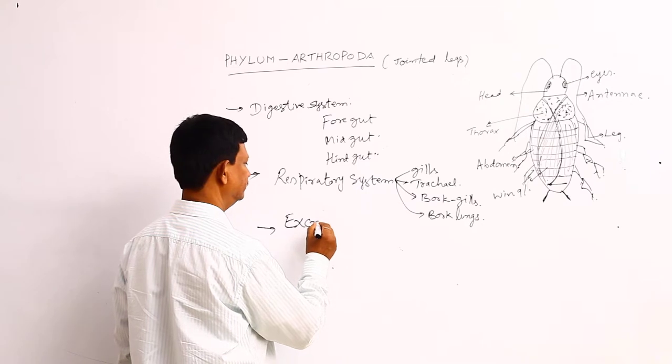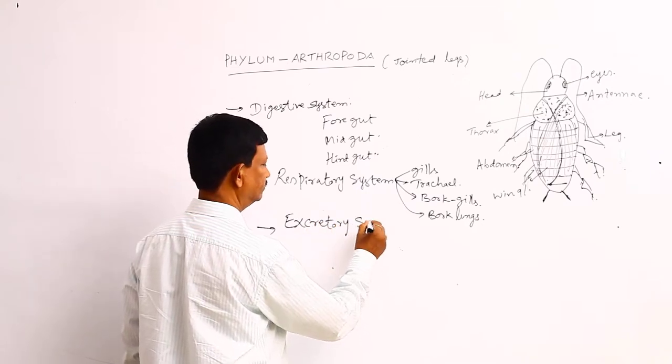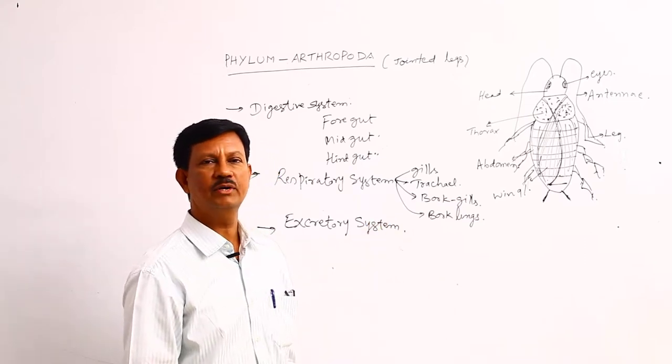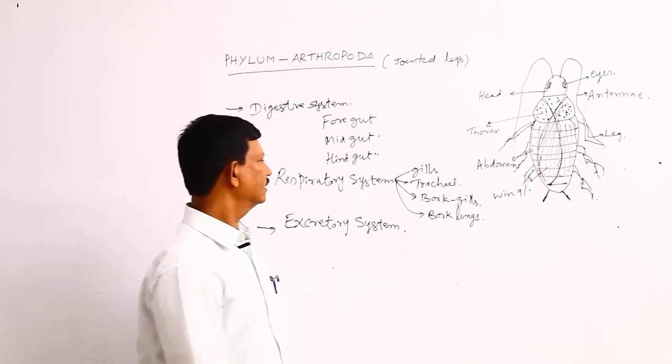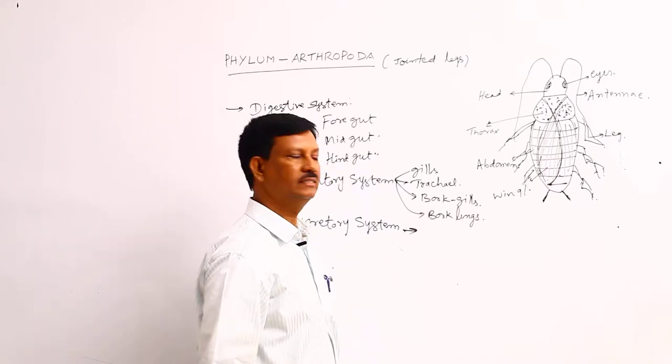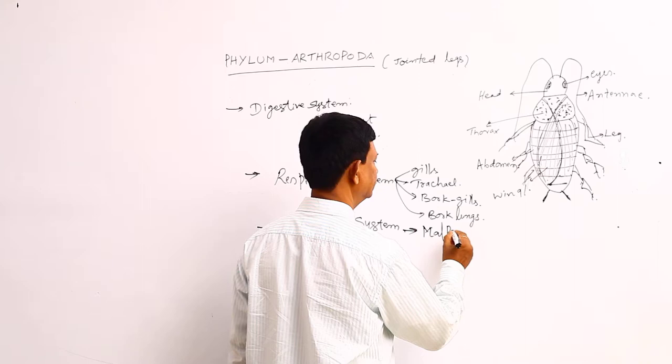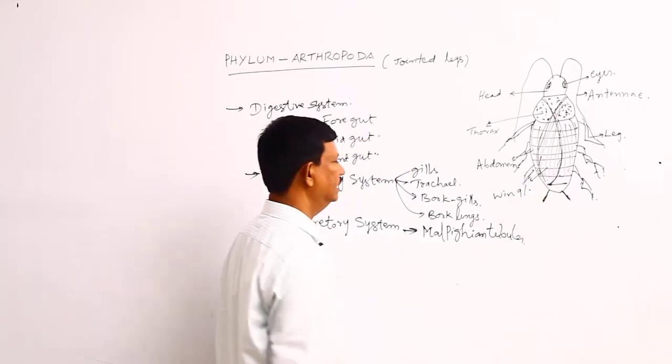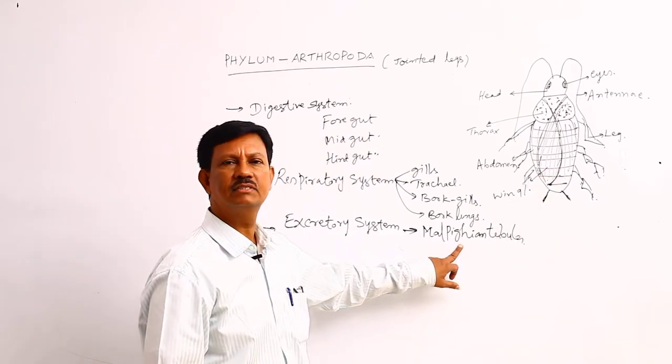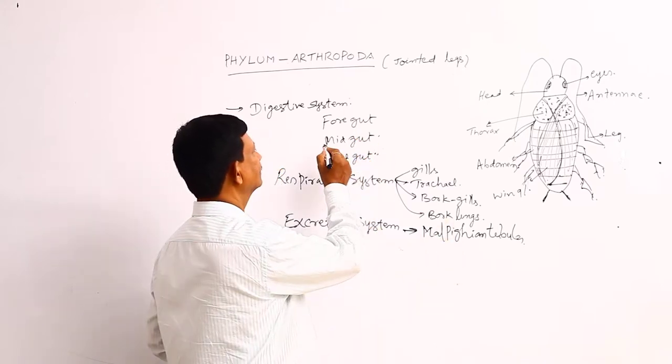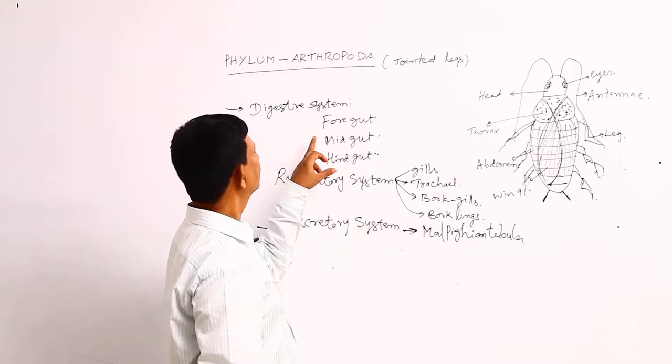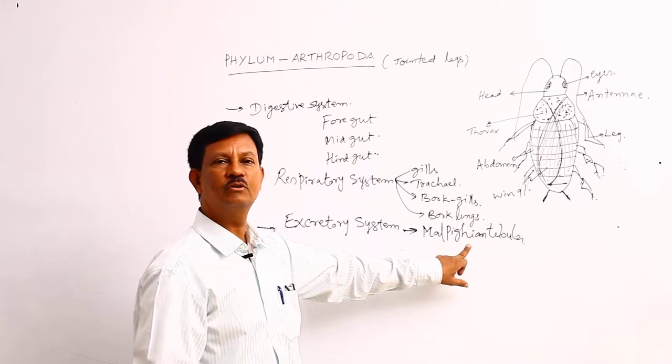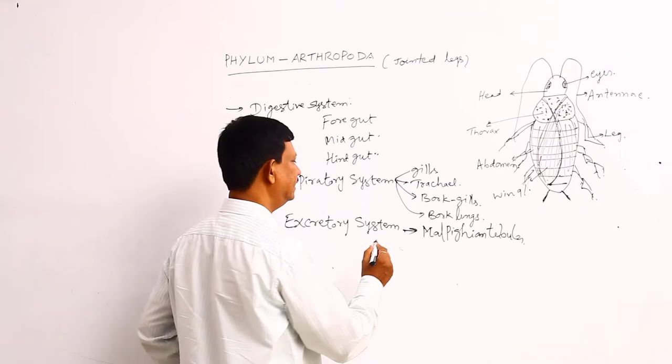In the excretory system, the removal of nitrogenous waste material from the body occurs. There are different types of excretory organs present. Malpighian tubules are present in the cockroach. These are very minute hair-like structures present between the midgut and hindgut. There are nearly more than 100 hair-like structures which collect nitrogenous waste material from the surrounding. They excrete uric acid.